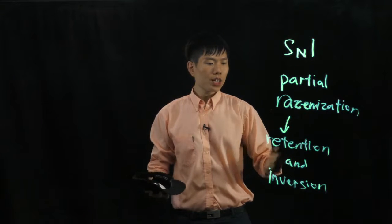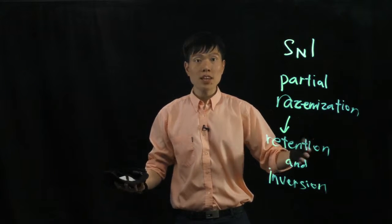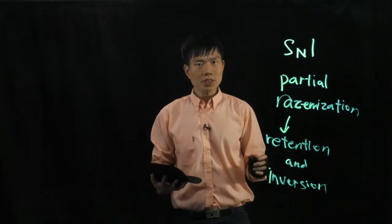So why would there be a choice of retention and inversion or even both in SN1? Now you have to think like this.